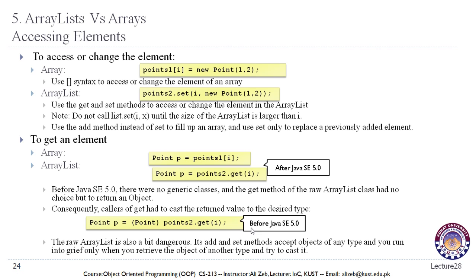The raw ArrayList is also a bit dangerous — its add and set methods accept objects of any type, and you only run into trouble when you retrieve an object of another type and try to cast it. You need to know the type of the element at that position, which can be a problem.